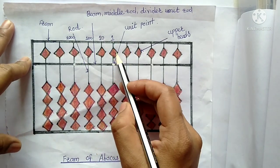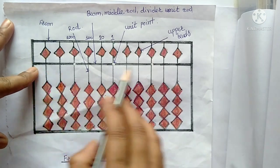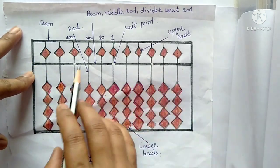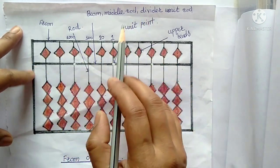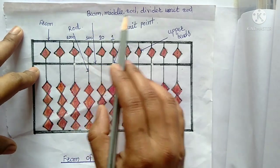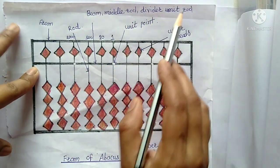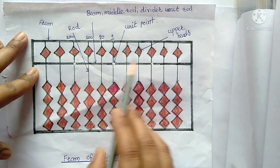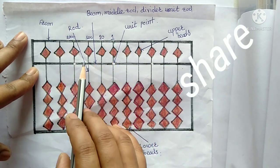The upper bits and the lower bits are divided by one sleeping line that is called as divider, beam, middle rod, divider or unit rod. In this unit rod we can see the white dot.